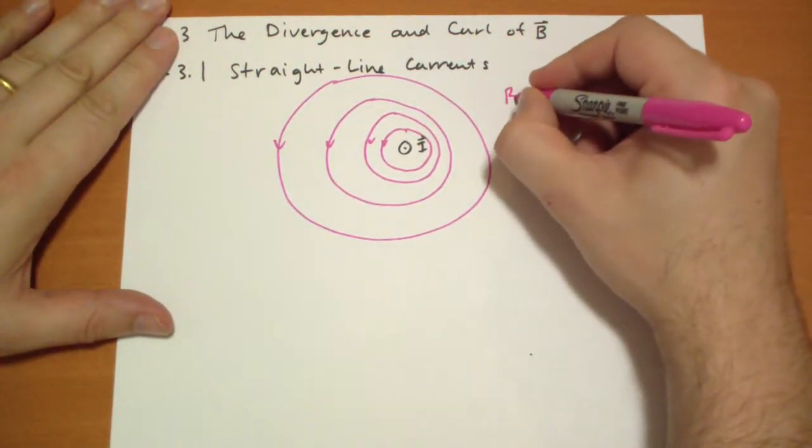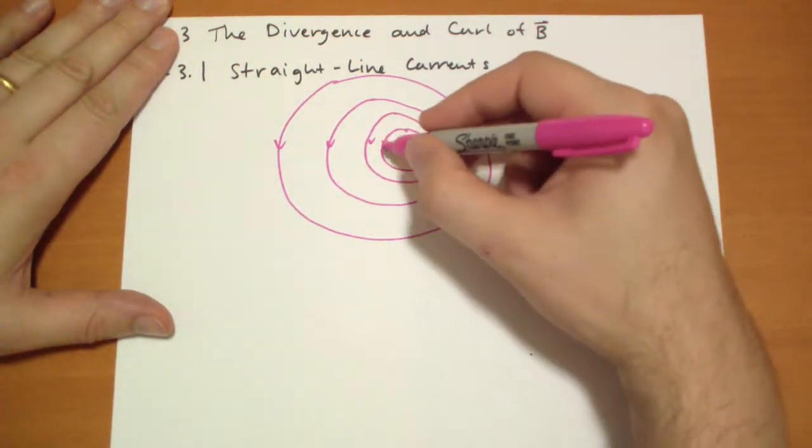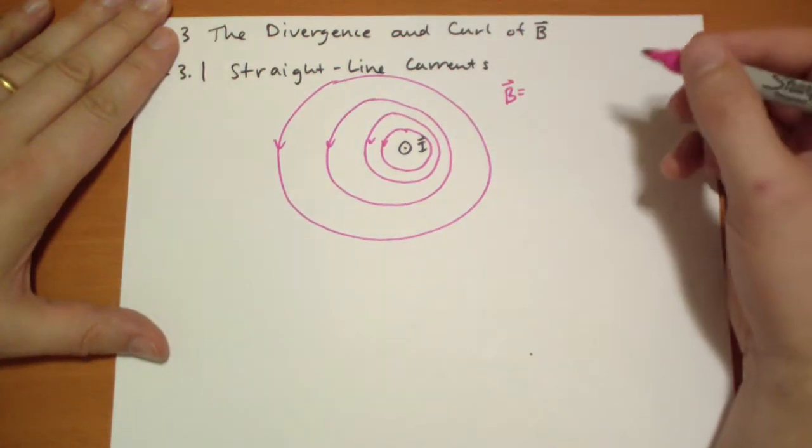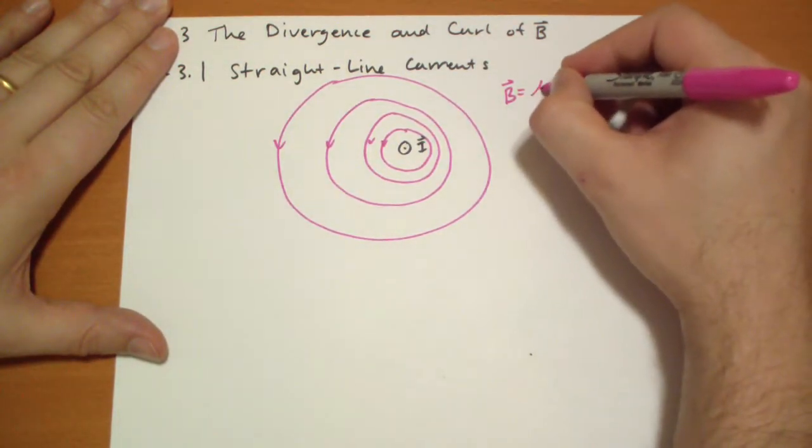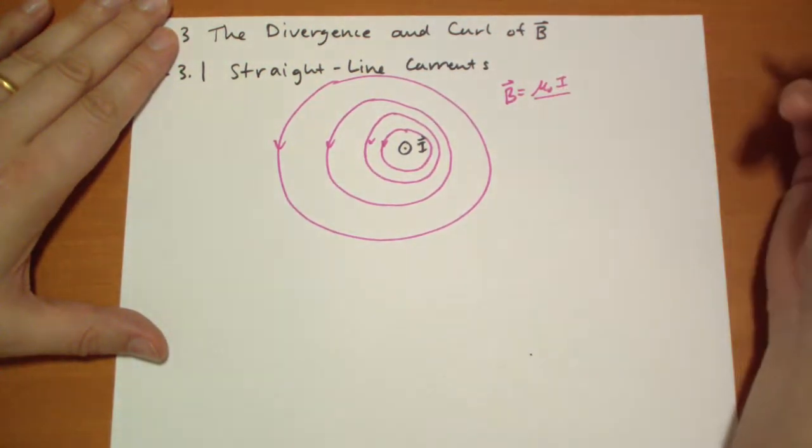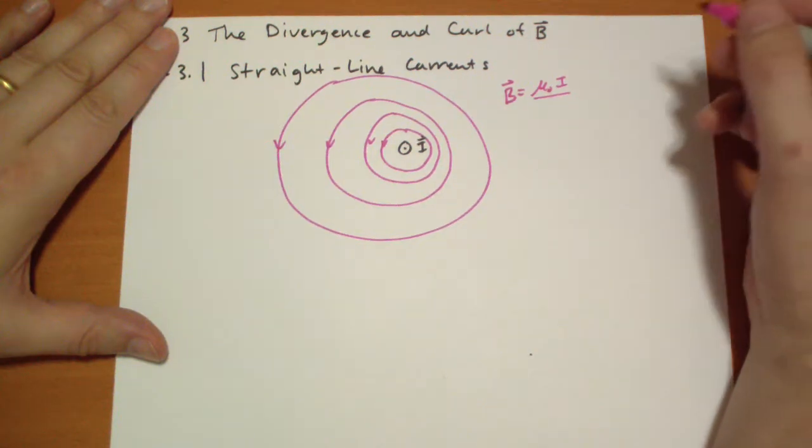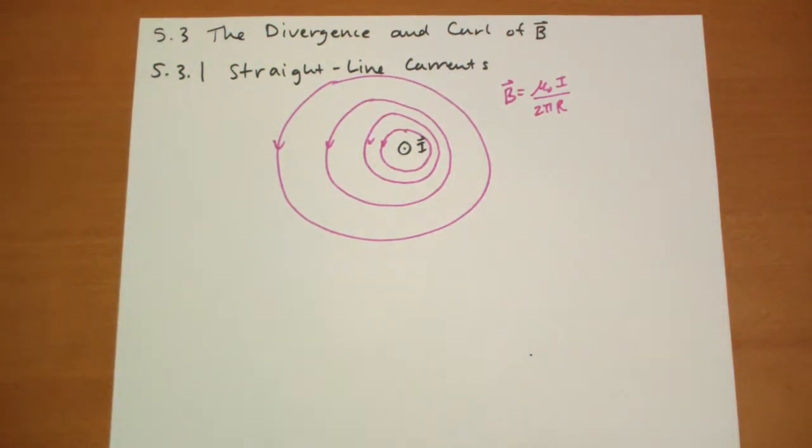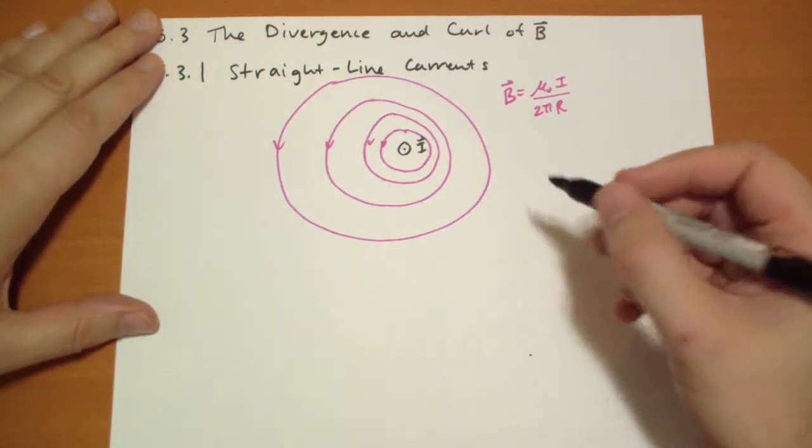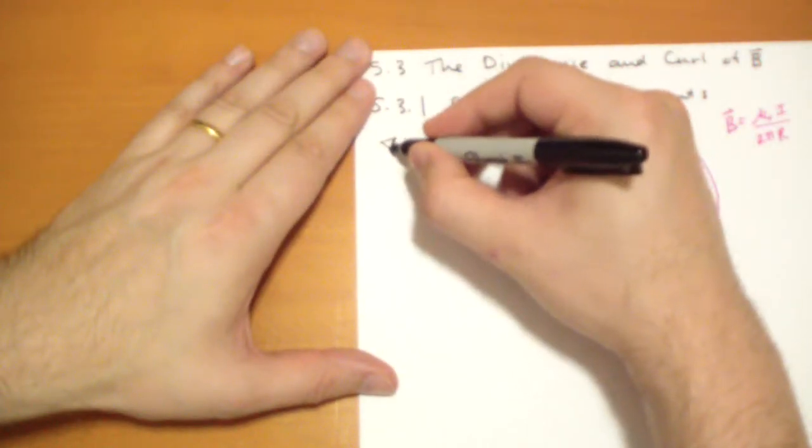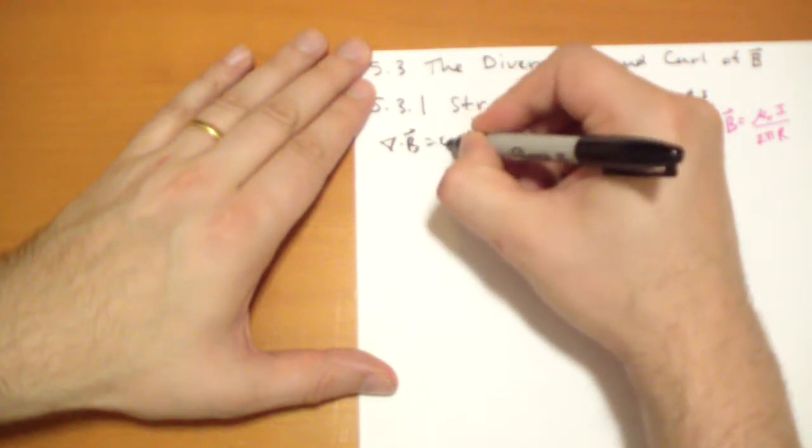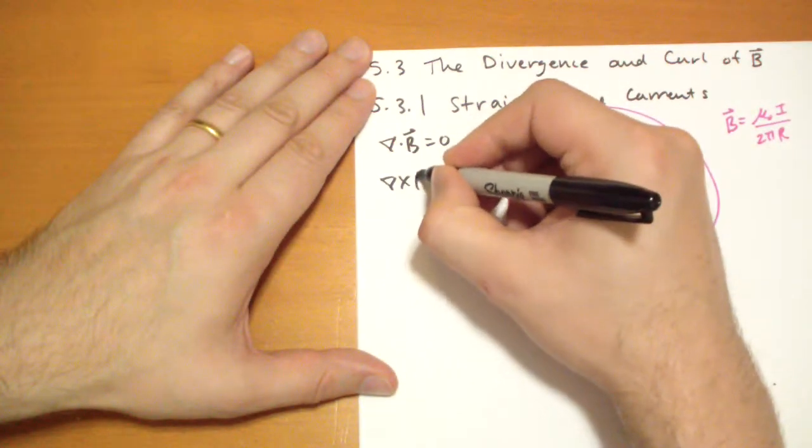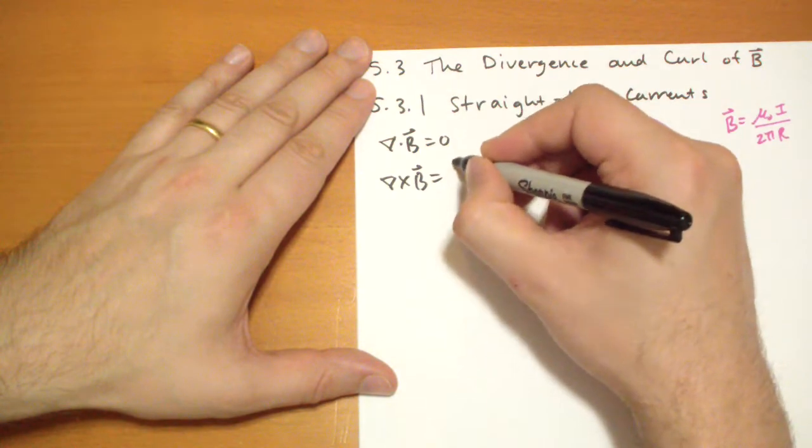What's the magnitude of B? Well, the magnitude of B only depends on how far away from that current you are. So let's calculate. Looking at this at a glance, it should be pretty obvious by visual inspection that the divergence of B is zero, and the curl of the B vector is something important.